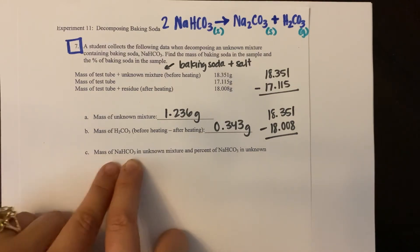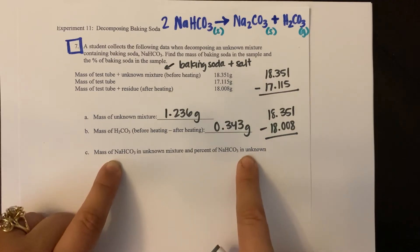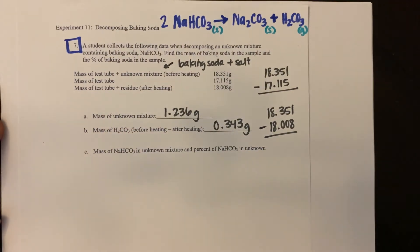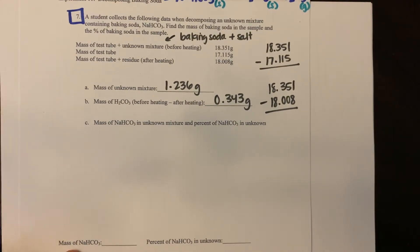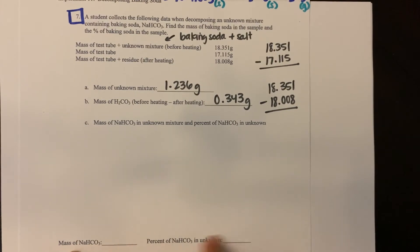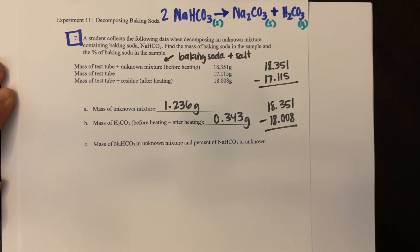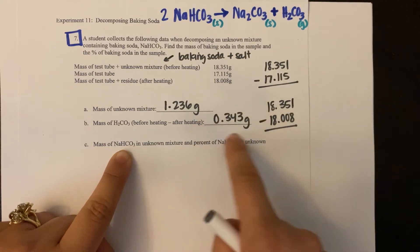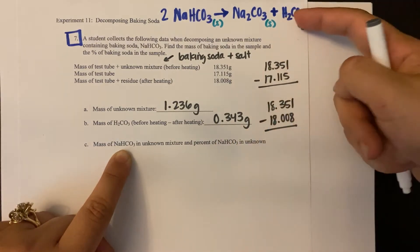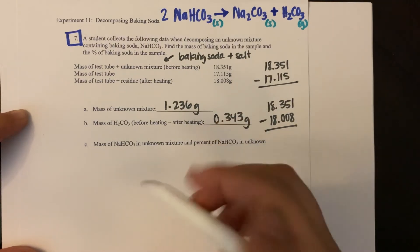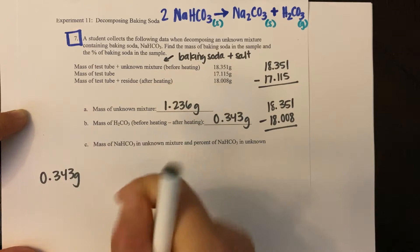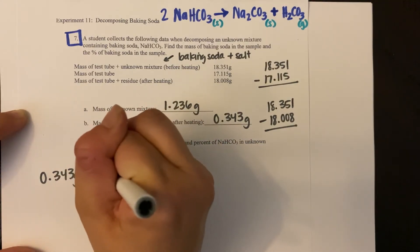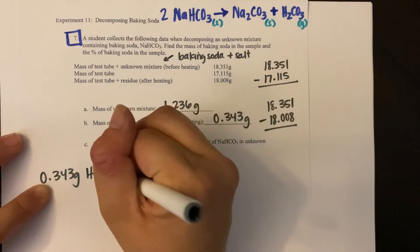Now it says the mass of baking soda, sodium bicarbonate in an unknown mixture and percent of sodium bicarbonate in the unknown. So this is asking me two different things. Here's the space for you to fill up with the mass and the percent. So it's two different steps. First, find the mass of your sodium bicarbonate, of your baking soda, and the way you do that is a stoichiometry problem using what you know. You have 0.343 grams of carbonic acid. You're going to work backwards. So I know 0.343 grams of H2CO3. That was what was produced in this wonderful equation, from this reaction.